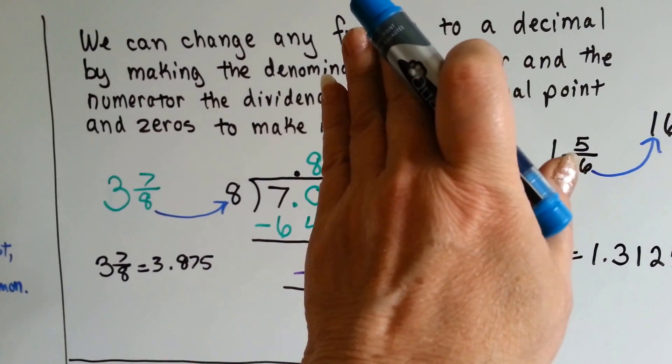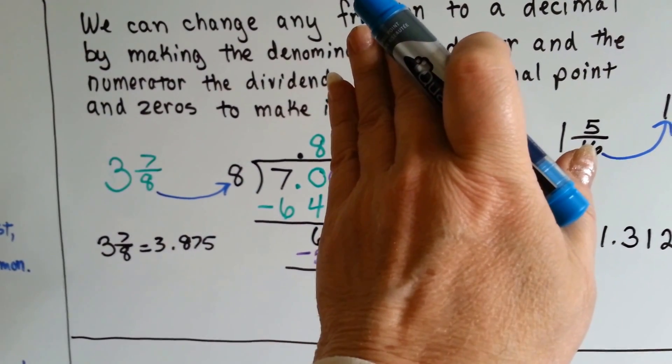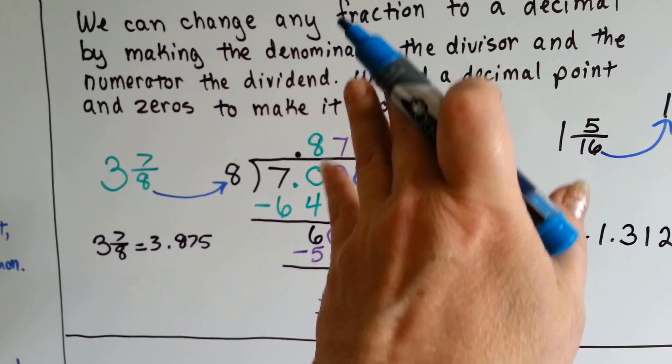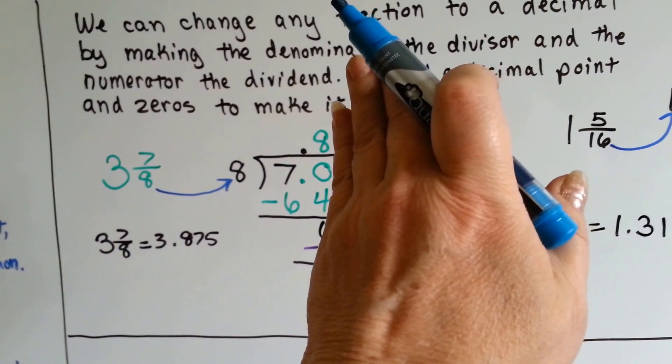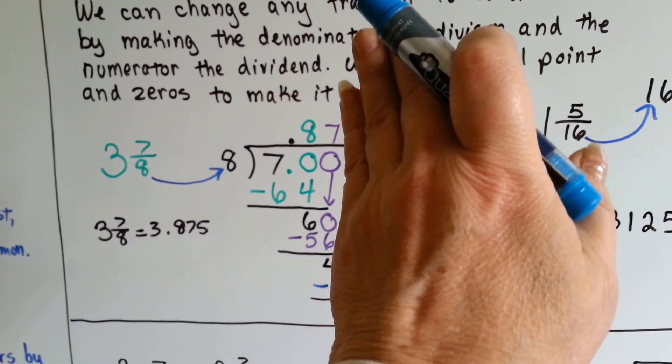8 can't go into 7 so we add a decimal point and a 0. 8 times 8 is 64 so it can go in 8 times. We write it above the 0. We put our 64 into our subtraction and we get 6 left over. So we drop another 0.